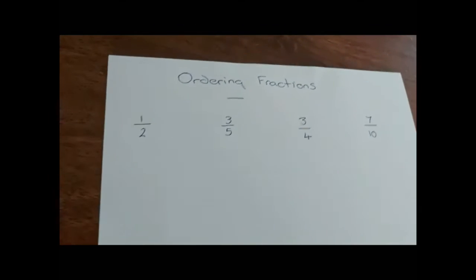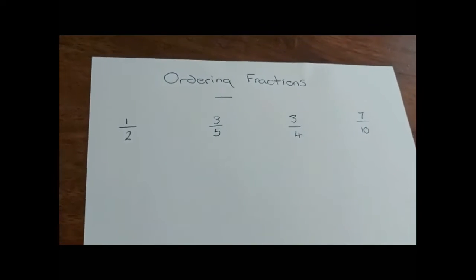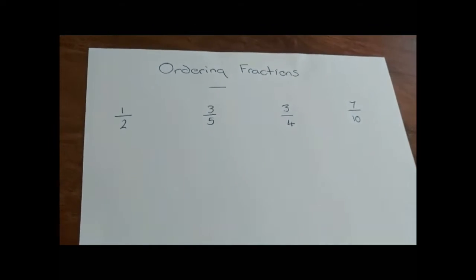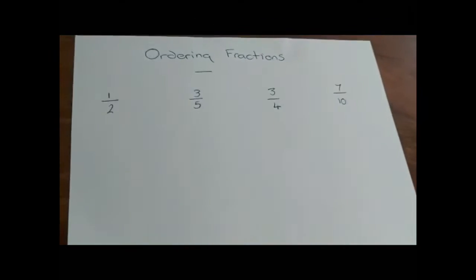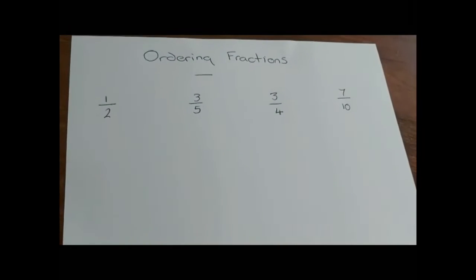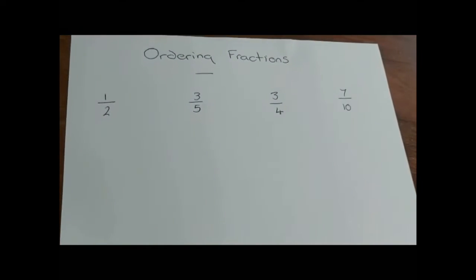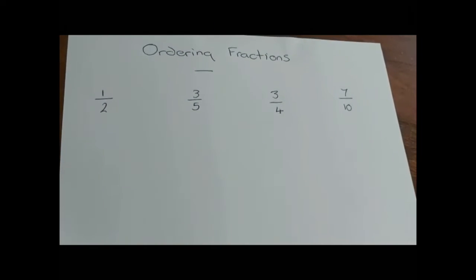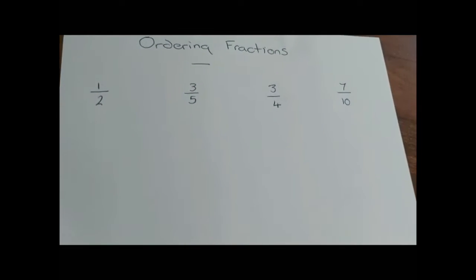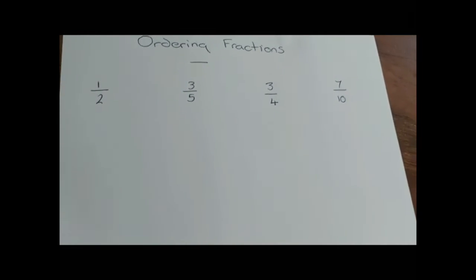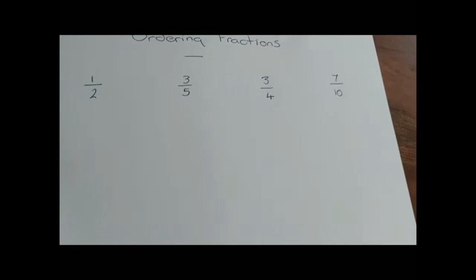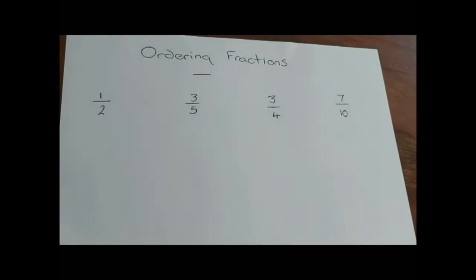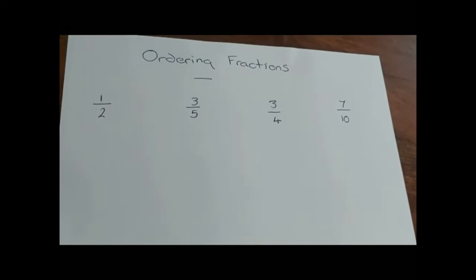We're going to look at ordering fractions. When we're ordering fractions, we're putting them in order — sometimes from smallest to biggest and sometimes from biggest to smallest. If we're starting with the smallest, we call that ascending order, and if we're starting with the biggest, we call that descending.